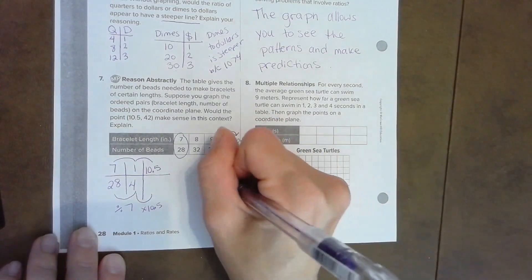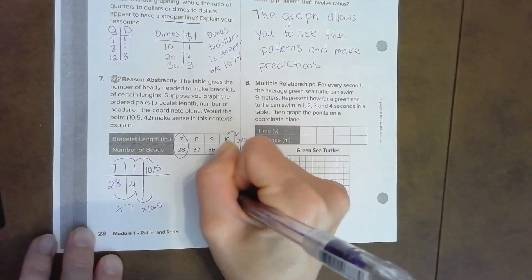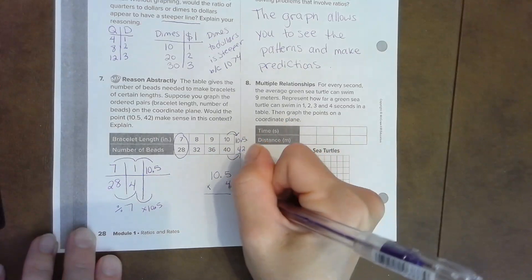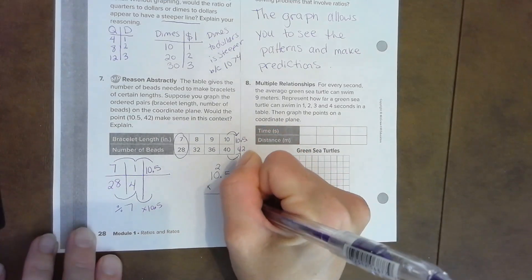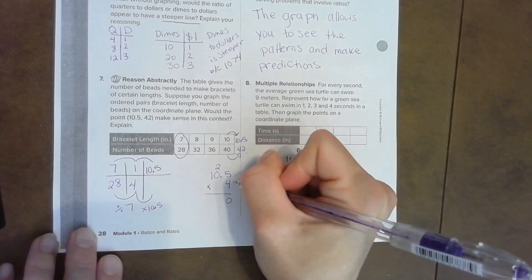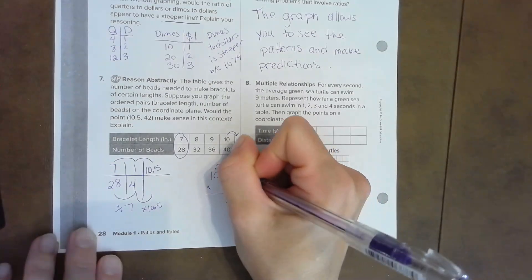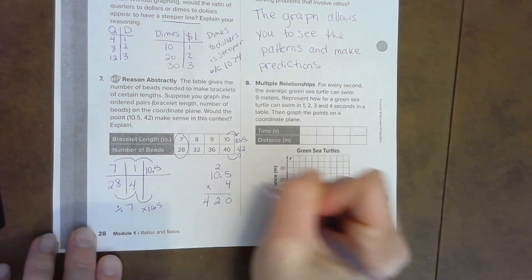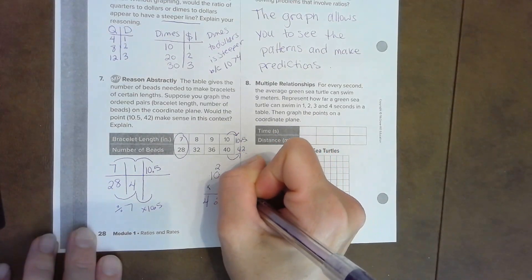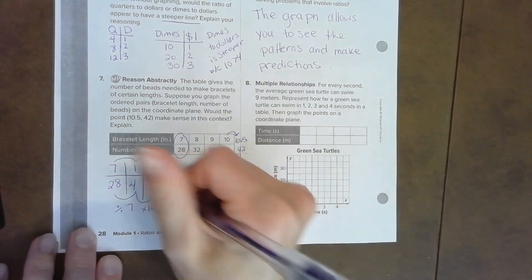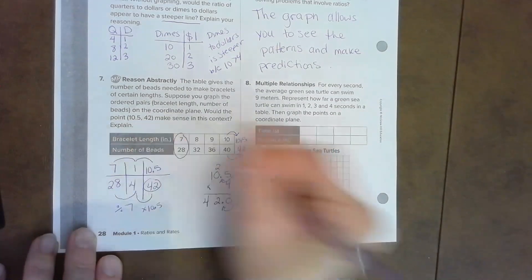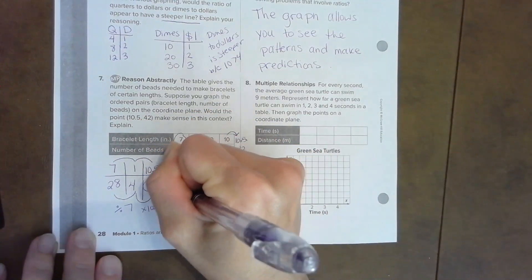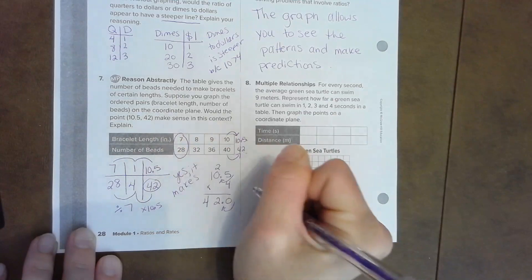You may need to do that off to the side: ten point five times four. Four times five is twenty, carry your two. Four times zero is zero plus two is two, and four times one is four. There's one decimal place, so I move my decimal over one. Yes, that is correct. Yes, it makes sense.